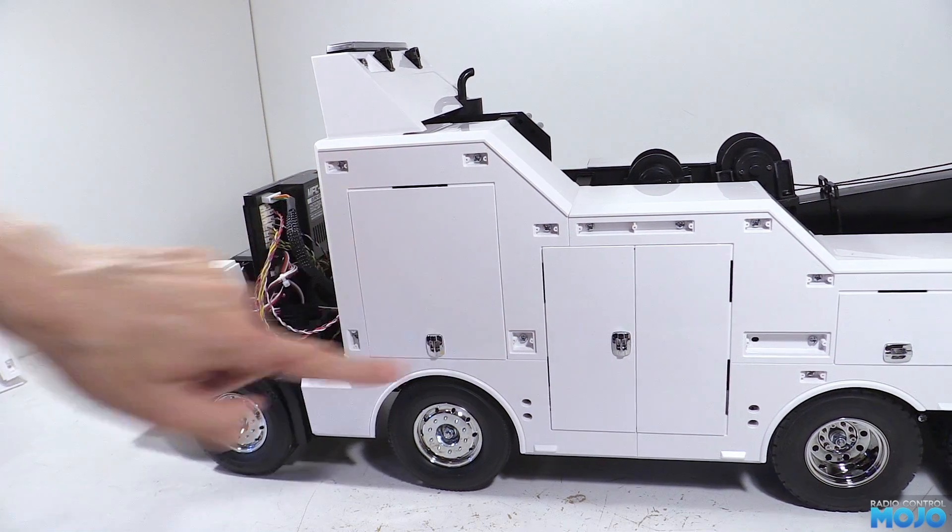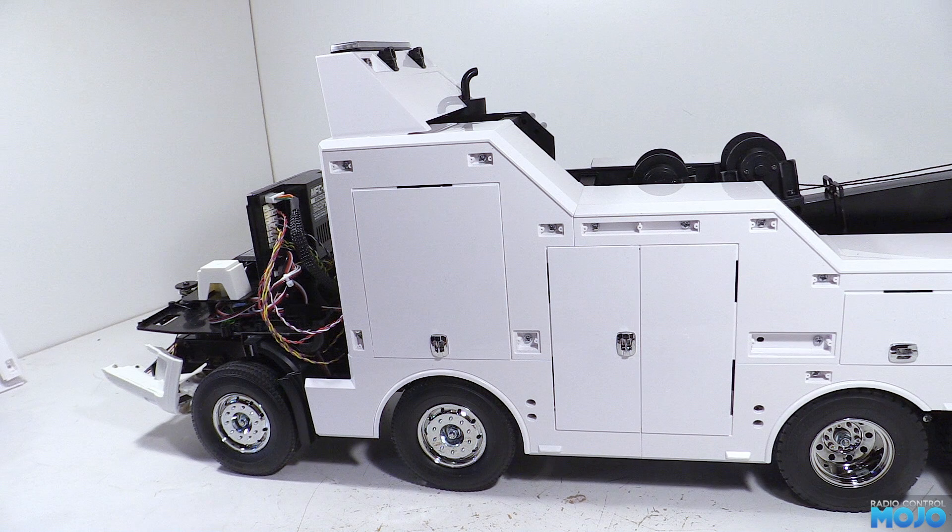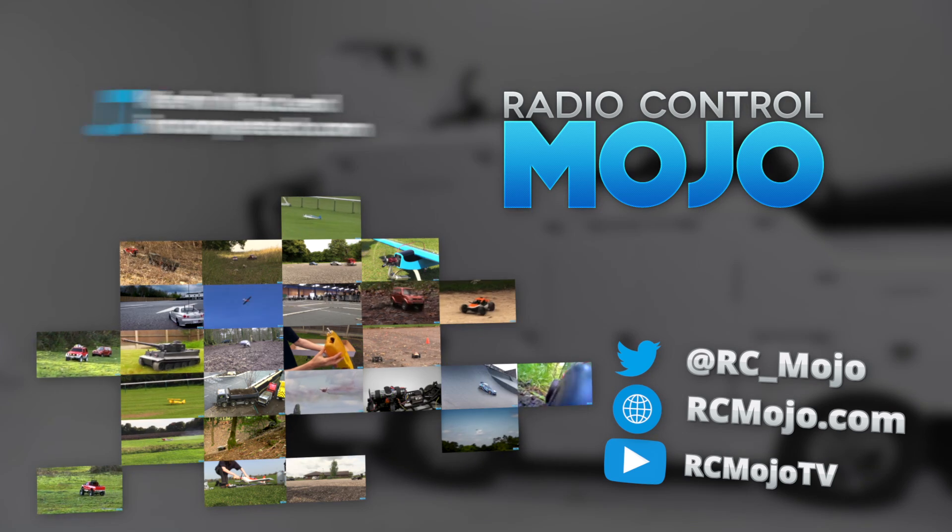For today all that's left to do is to reattach the body panels and the doors. Next time we'll work on the cab lights and refit. So that's the first bit of the customisation complete, just another 10 or 15 videos to go.